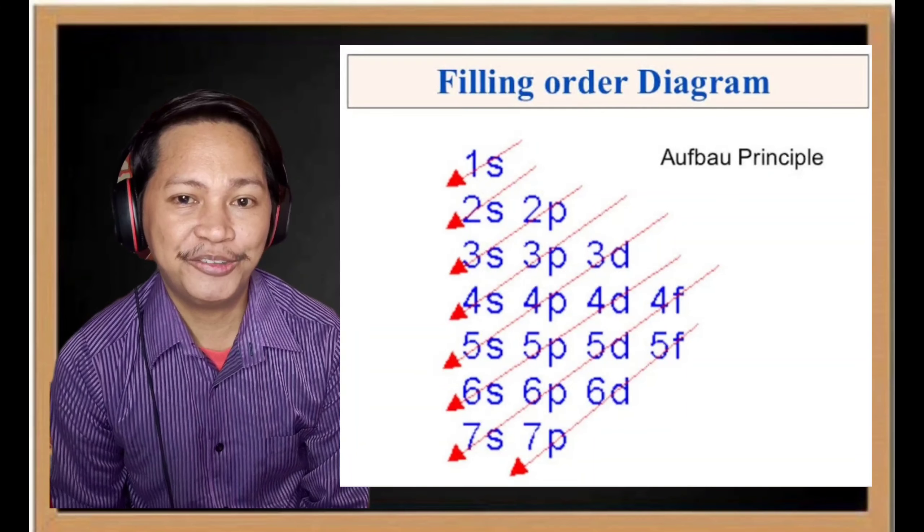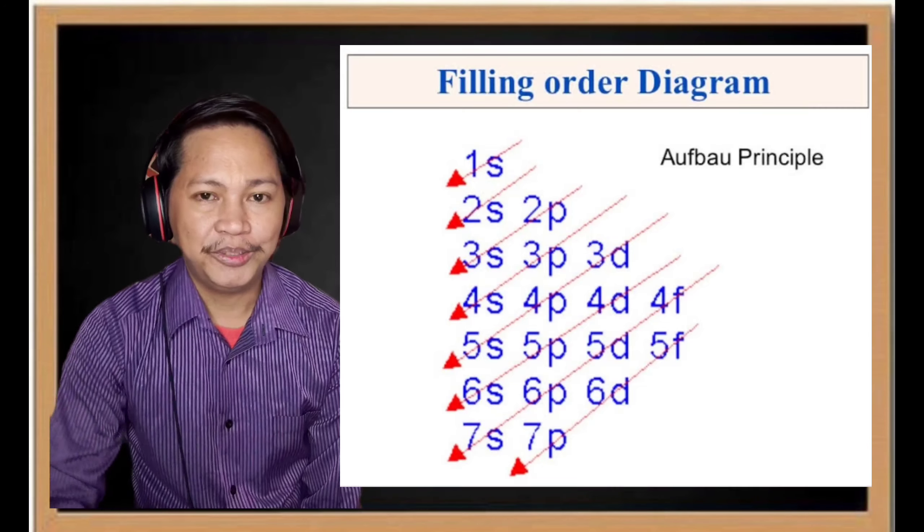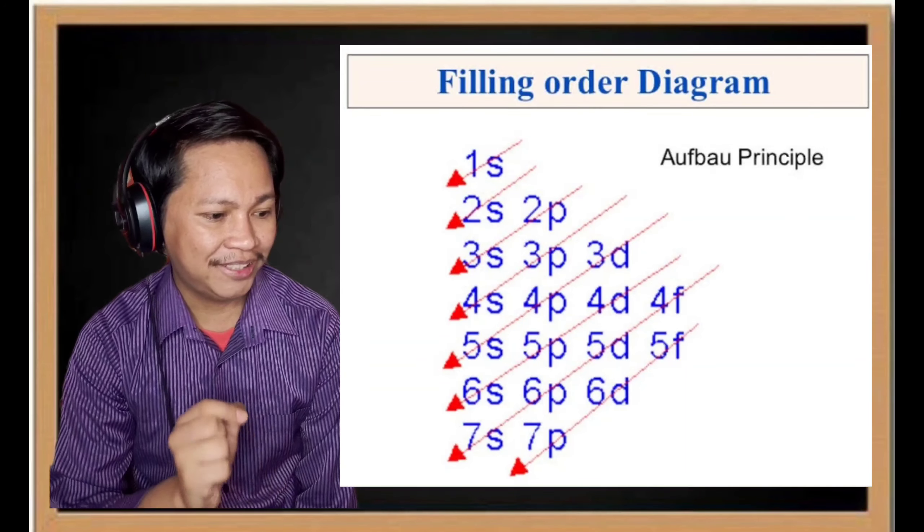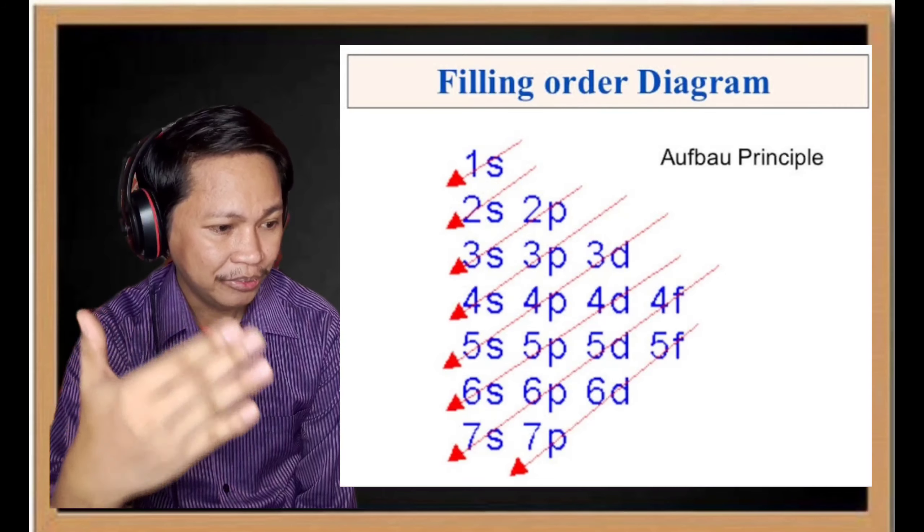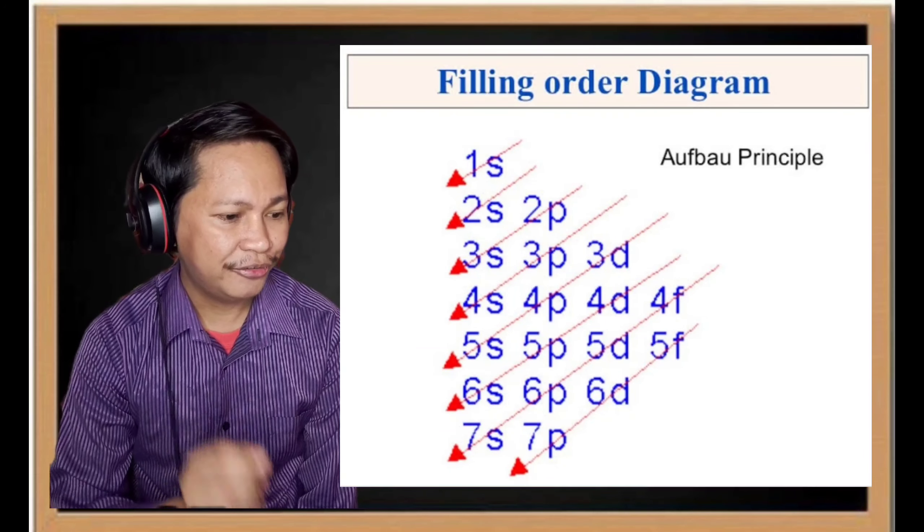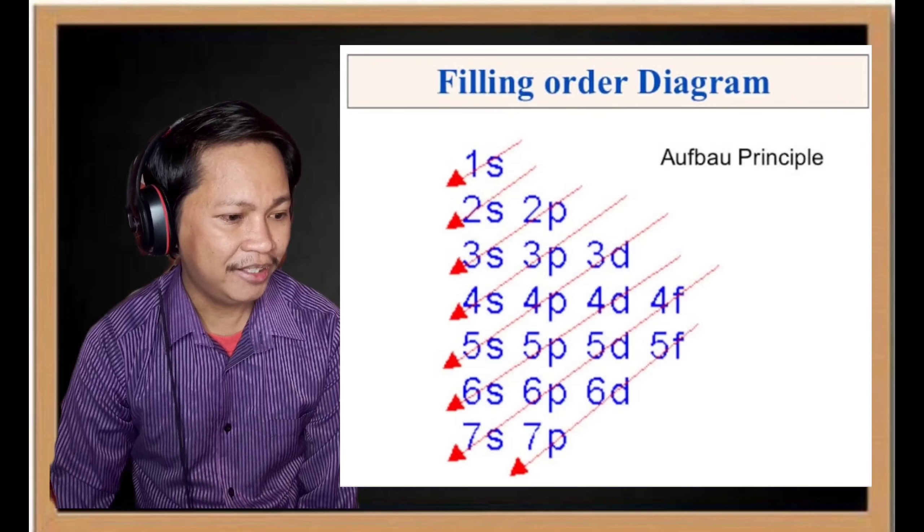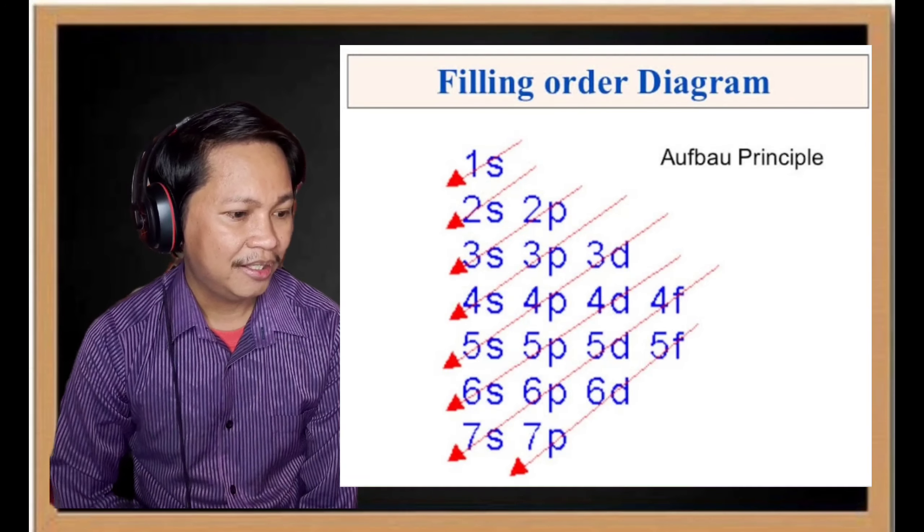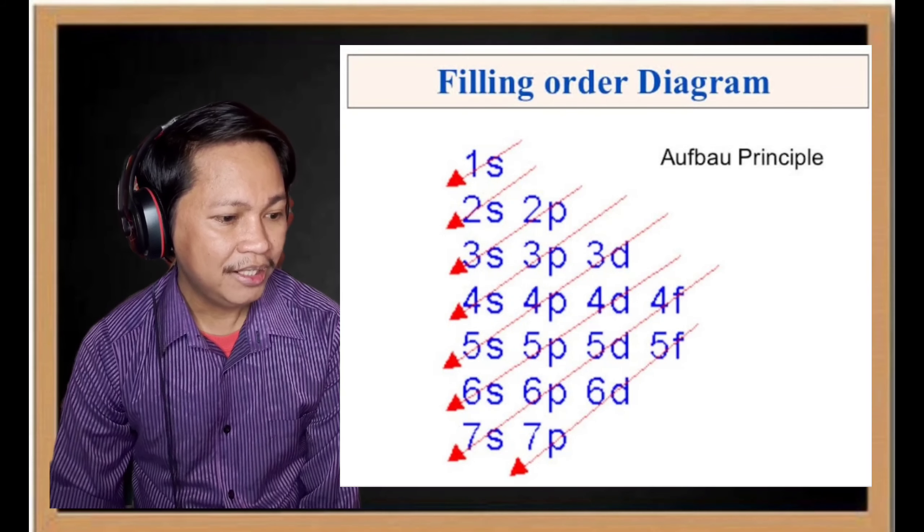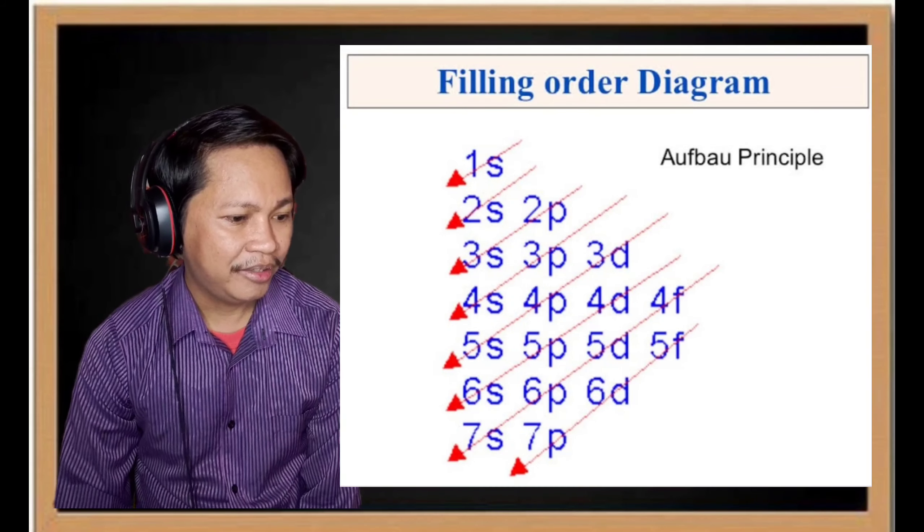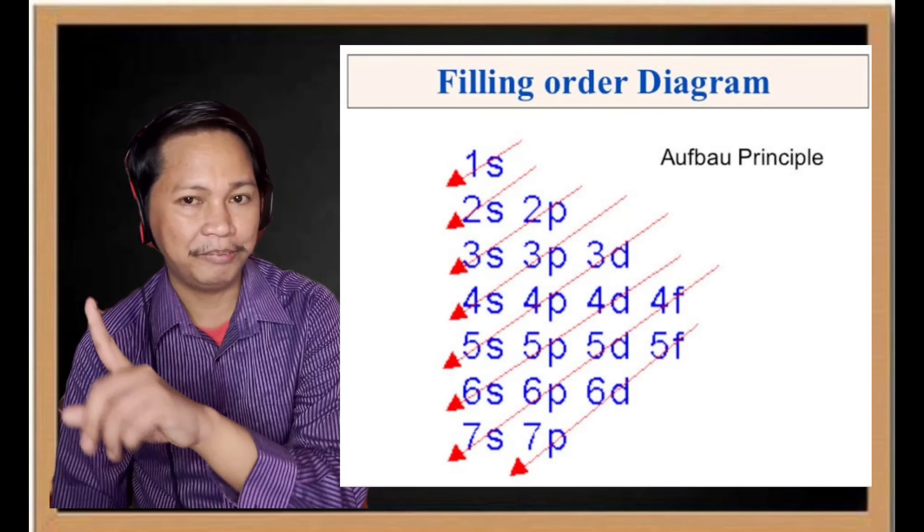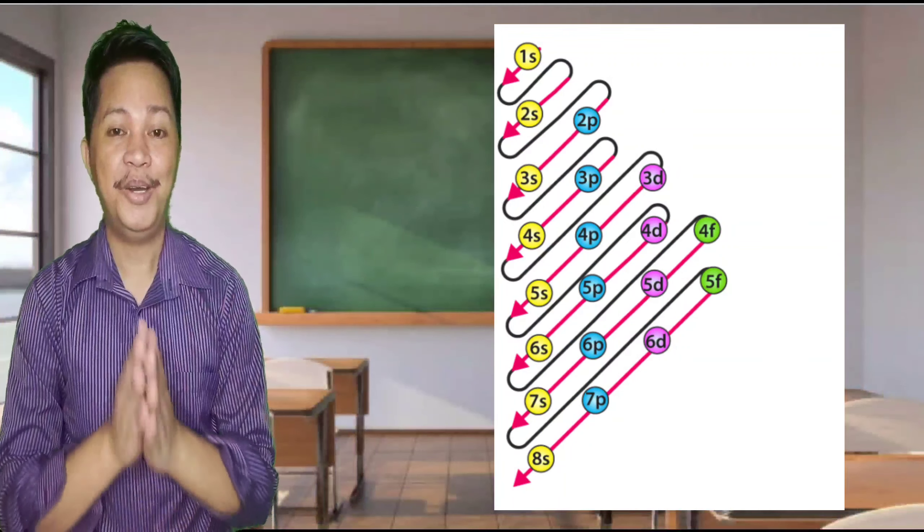For number 3, use the diagram below to write the electron configuration of oxygen following the arrow. Here is the tip in writing the electron configuration. Just have to write 1, 2, 3, 4, 5, 6, 7, and then write s2 for all of them. Then the second column would be 2, 3, 4, 5, 6, 7, and then write p6 for all of them. The third column will be d10—3, 4, 5, 6—and then 4 and 5 for f14. You start from the top, it's like zigzag.